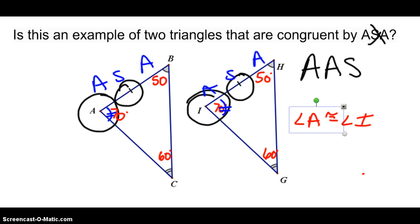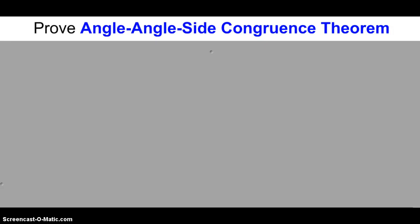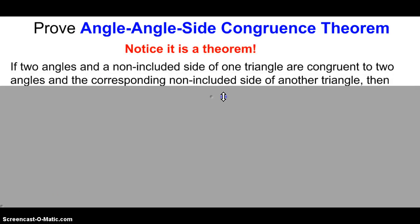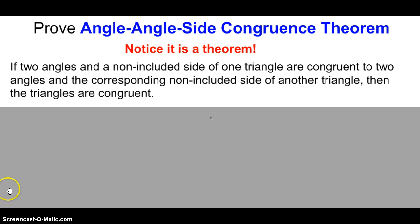Therefore, we have another congruence shortcut, but this one is a theorem called the Angle-Angle-Side Congruence Theorem. The AAS Congruence Theorem states that if two angles and a non-included side of one triangle are congruent to two angles and the corresponding non-included side of another triangle, then the triangles are congruent.